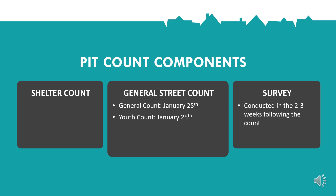The shelter count collects information on the number of people staying in shelter programs across the county. The youth count focuses on counting unaccompanied young people under the age of 25 and is typically done around 3 pm to 7 pm — this is not available for general community participation at this time. Finally, the survey component is typically conducted in conjunction with the general street count. Surveys are conducted with a representative sample of people experiencing homelessness across the county and provides a more detailed understanding of the homeless experience and the diversity of the population, including information on veterans, families with children, and people experiencing long-term homelessness.